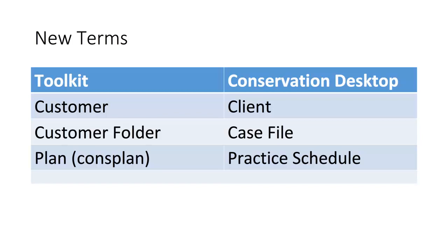Many field offices have been confused by the plan term used in Toolkit. At one time, field offices were advised that the customer should only have one plan in Toolkit. In later releases, the customer could have many plans. If you think outside the Toolkit realm, a customer should only have one conservation plan. That plan may include several components such as a nutrient management plan, a grazing plan, an integrated pest management plan, etc. But they are all a part of his conservation plan.